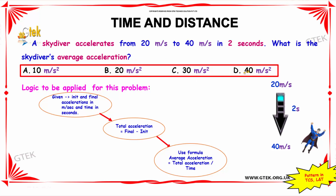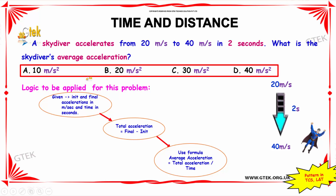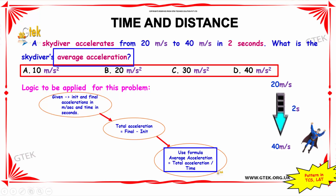The logic to be applied for this problem is: first, identify the given values — the initial and final speeds are in meters per second and the time is in seconds. Secondly, find the total change in speed using: final speed minus initial speed. And lastly, calculate the average acceleration using the formula: average acceleration equals total change in speed divided by time.